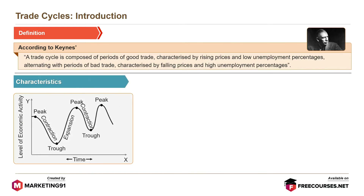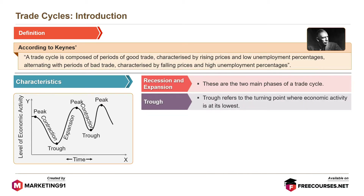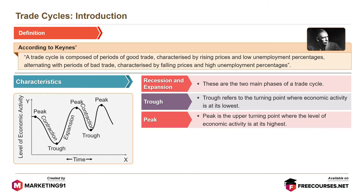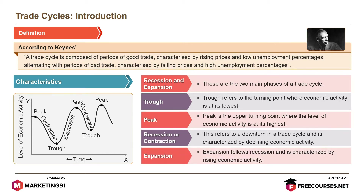Its characteristics are recession and expansion — the two main phases of a trade cycle. Trough refers to the turning point where economic activity is at its lowest. Peak is the upper turning point where the level of economic activity is at its highest. Recession or contraction refers to a downturn in a trade cycle, characterized by declining economic activity. Expansion follows recession and is characterized by rising economic activity.